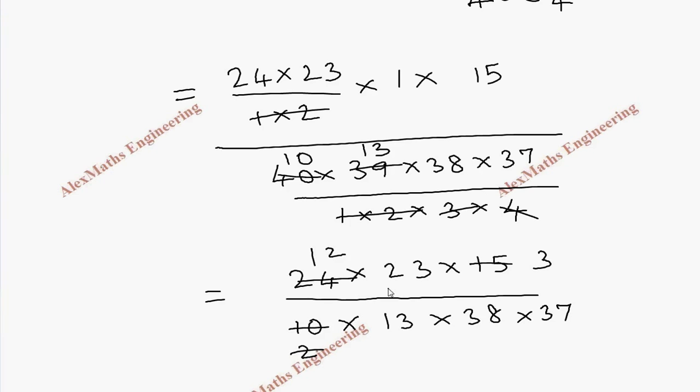We can cancel 12 times this, we can cancel 12 times again. We can cancel this with 2 table, 19 and this is 6.